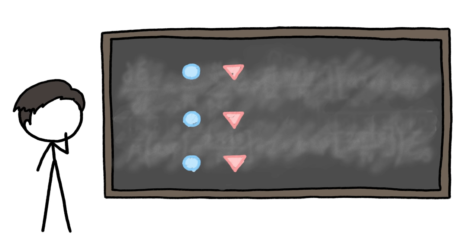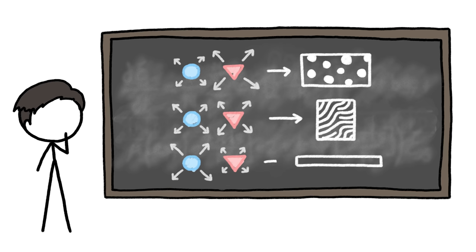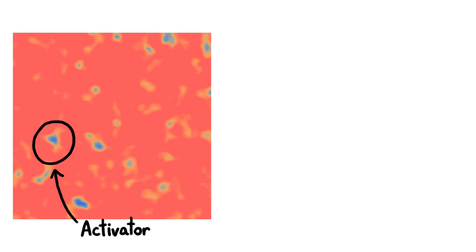The beauty of Turing's theory is that by adjusting the variables, like the spreading rate of the activator and inhibitor or the total area of the system, you can get all kinds of patterns. For example, if you start out with slightly more activator than inhibitor in a bunch of spots, you might end up with, well, a bunch of spots.